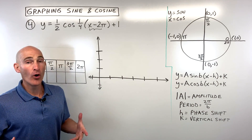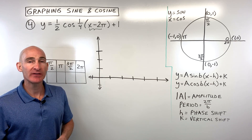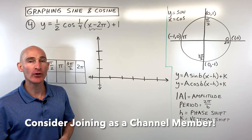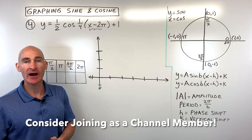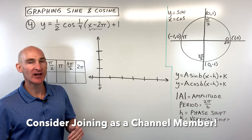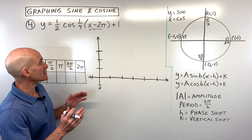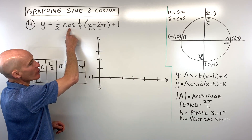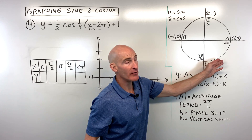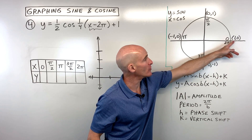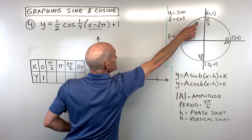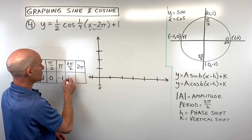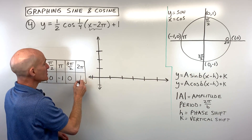Before the last example — if you enjoy the way I explain things and want to learn more about Algebra 2, I've got a video course linked in the description. Now for example four — working with the cosine graph, so we look at x-coordinates on the unit circle: cosine of 0 = 1, cosine of π/2 = 0, cosine of π = -1, cosine of 3π/2 = 0, cosine of 2π = 1.